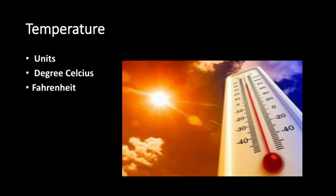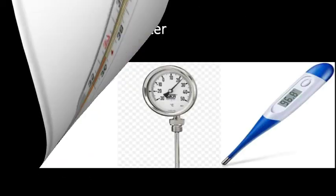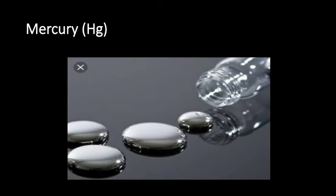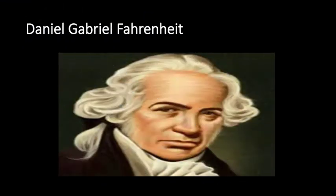Temperature is expressed in units. A unit is a standard measure used to express amounts of something. Generally, temperature is measured by a unit called degree Celsius. There is another unit of temperature called Fahrenheit. Fahrenheit is a degree scale proposed by Daniel Gabriel Fahrenheit, who proposed it in 1724.